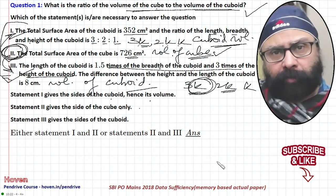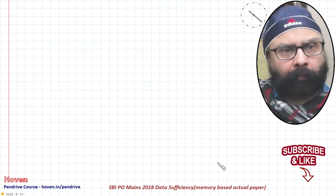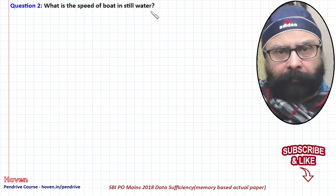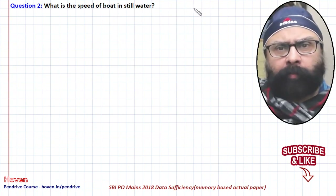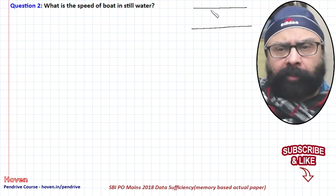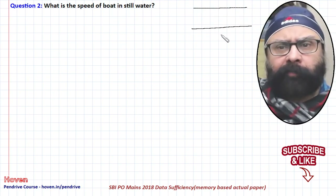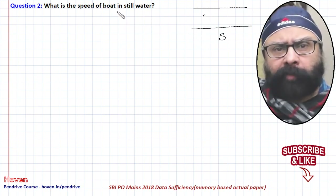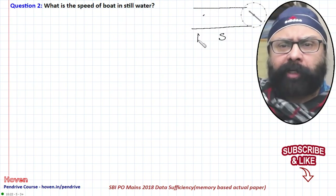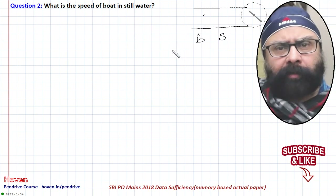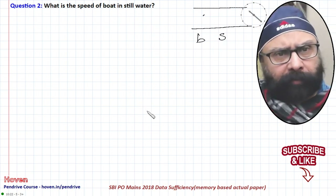Let us move to the next question: what is the speed of the boat in still water? This is a boat-and-stream type question. Let the speed of the stream be s and the speed of the boat in still water be b.